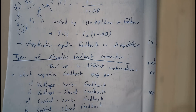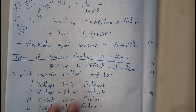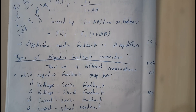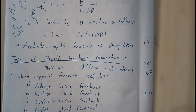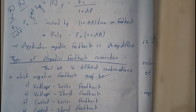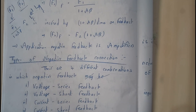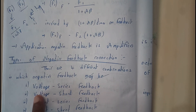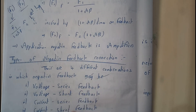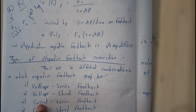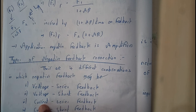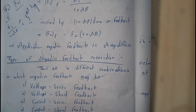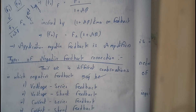Hello guys, we are back with our next tutorial. In this tutorial we will be going through different types of connections in negative feedback. There are totally four different connections: voltage series feedback connection, voltage shunt feedback connection, current series feedback connection, and current shunt feedback connection.